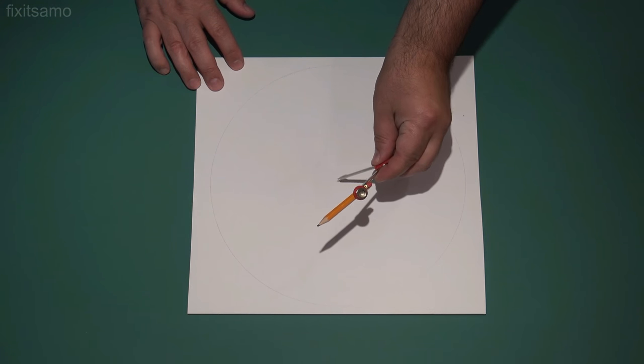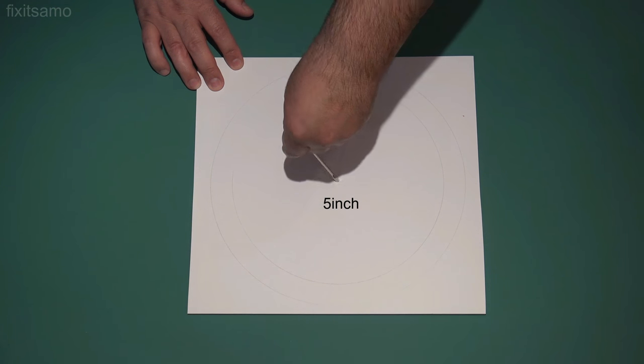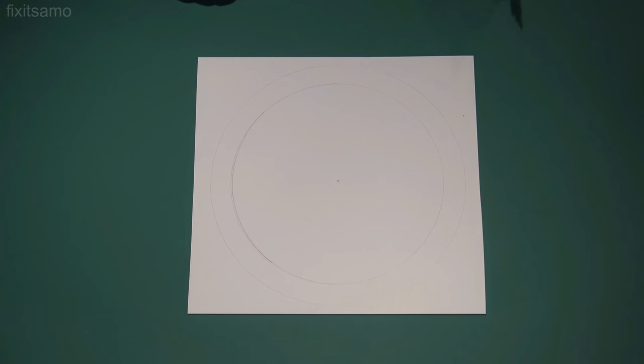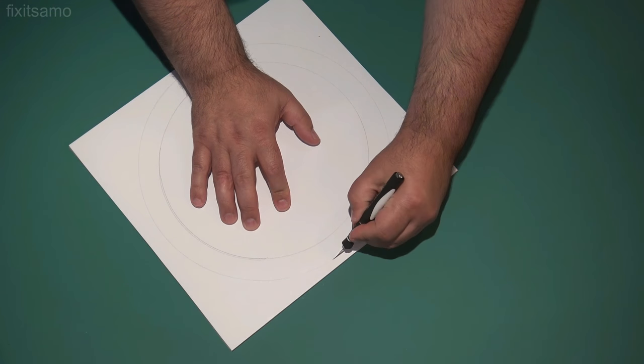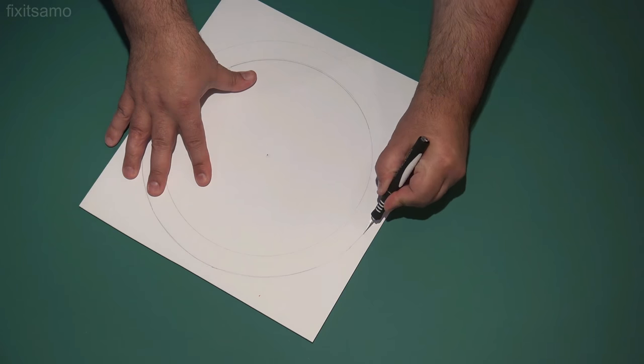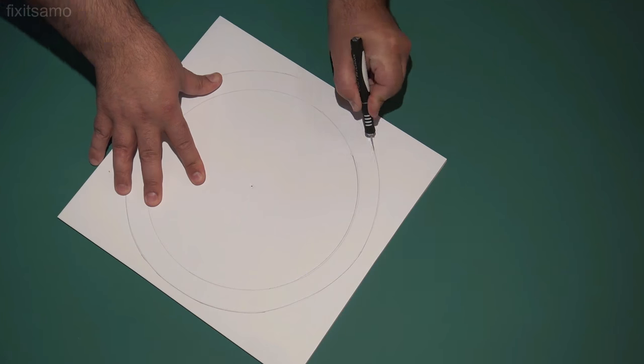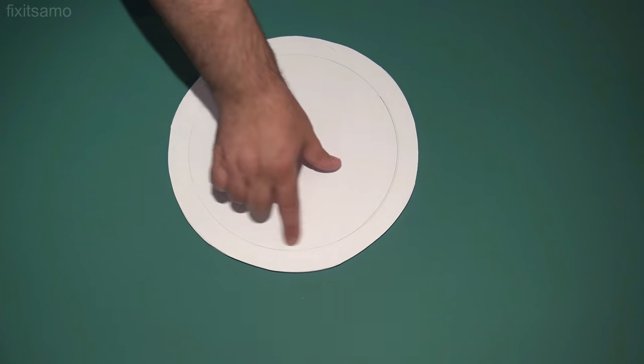Now we're going to make another circle of five inch. And now we're going to use the cutter and cut the circles. And now we're going to cut the second circle.